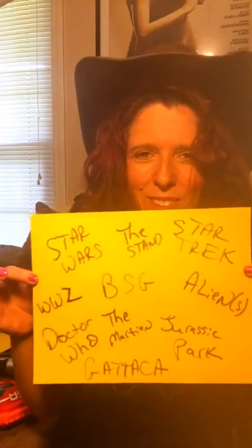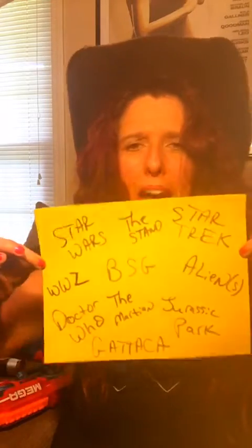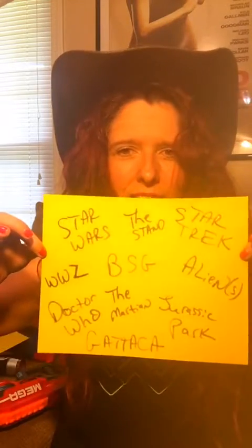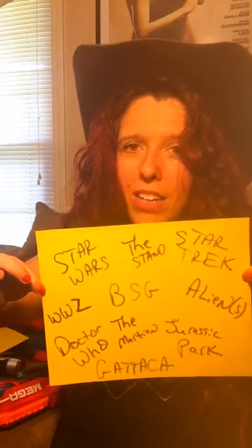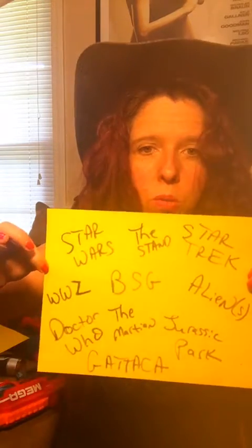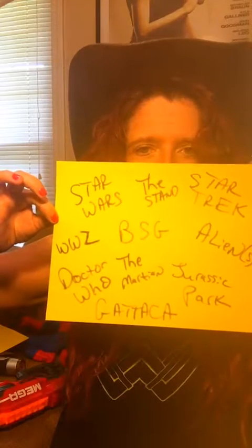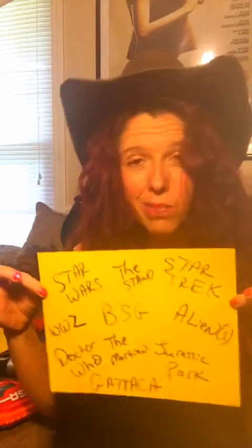Let's talk about the different types of sci-fi films. We've got Star Wars, Star Trek, Battlestar Galactica, Aliens — there's debate about which one's better, Alien or Aliens, it's hard to say — World War Z, Doctor Who, The Martian, Jurassic Park, and Gattaca. I'm going to talk about these various films and the possibilities involving what we could get from them in regards to science.